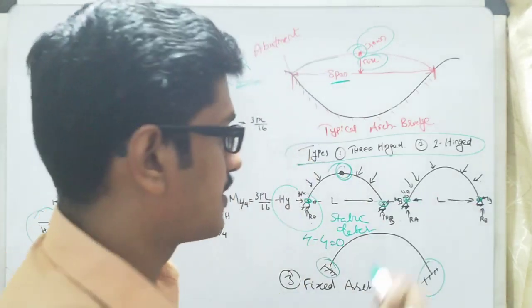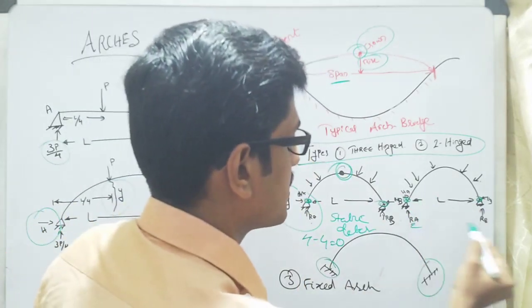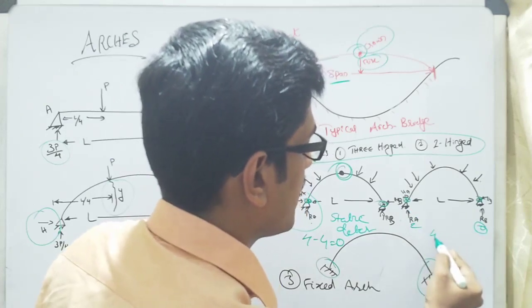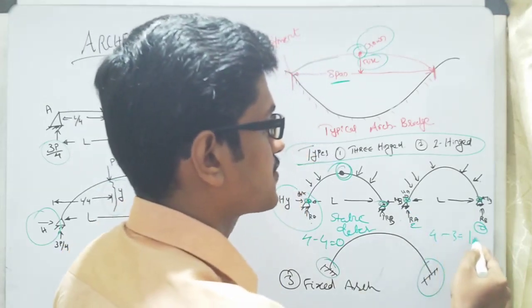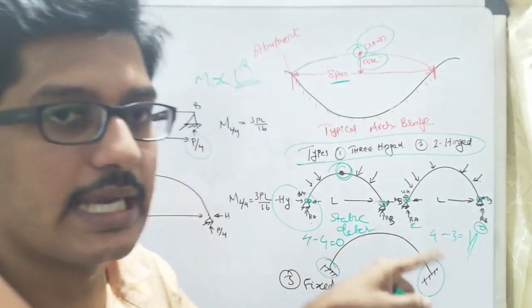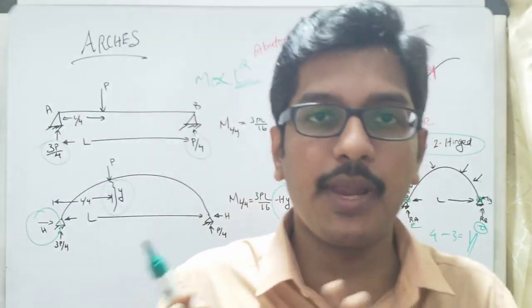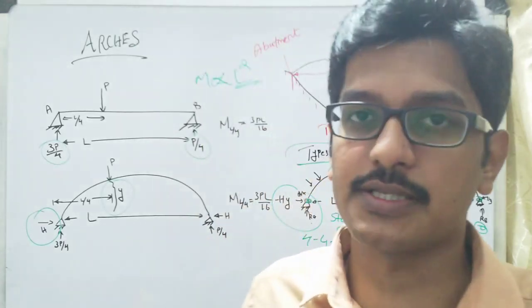For the two-hinged arch, here 2, also 2, equals 4, and number of equilibrium equations is 3. So the value is going to be 1, statically indeterminate. These are some of the main features related with arches.